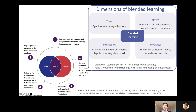Blended learning can be structured under four key pillars: time, space, interaction, and modality. We can have a learning experience at the same time or a different time — synchronous or asynchronous. We can learn in the same space or remotely. We can learn in one-to-one, one-to-few, or many-to-many interaction, and different technology will offer different modalities of learning.